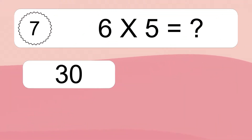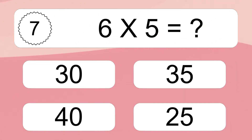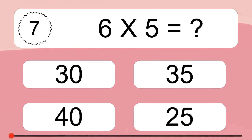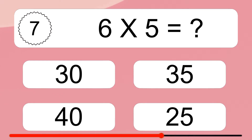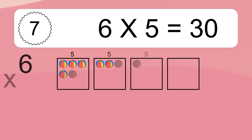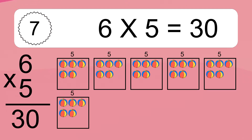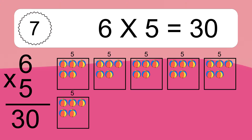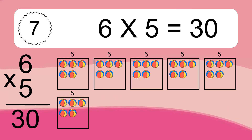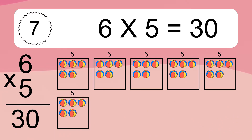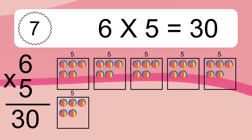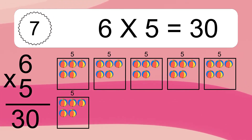6 times 5 equals what? 6 times 5 equals 30. We have 6 boxes, and each box has 5 colorful balls inside. If you count all the balls in all the boxes together, you will have 6 times 5 balls. This equals 30 balls.